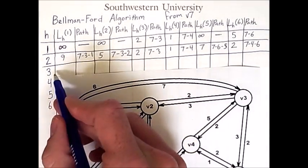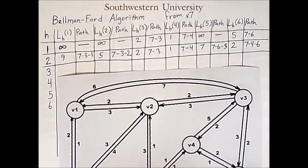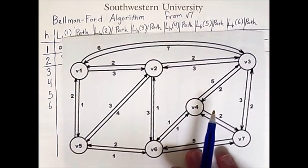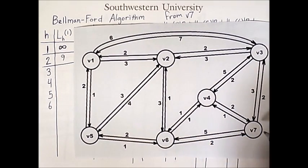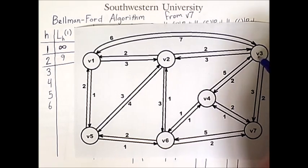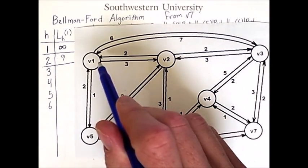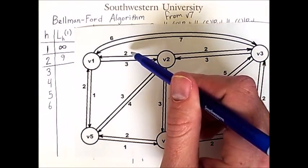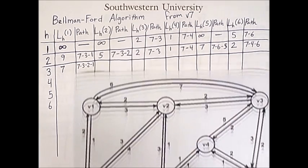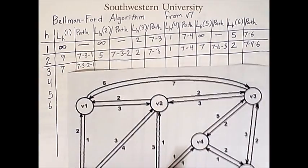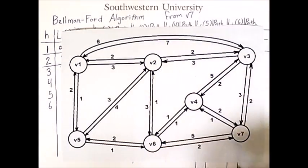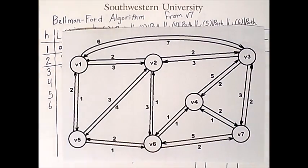Now we can take 3 hops and we will find some shorter paths yet again. Starting from 7 and going to v1, the shortest path is now to go from 7 to 3 to 2 to 1, and the cost of that is 2 plus 3 plus 2 equals 7. The shortest path to vertex 2 also changes because now we can take a route through vertex 4. We'll go 7, 4, 6, 2 for a cost of 1 plus 1 plus 1 equals 3.